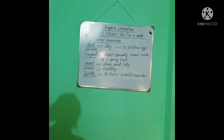Write these words and learn. Laid, that means to produce eggs. Chirped, that means short, squeaky sound made by a young bird. Smart, clean and tidy. Plump, that means healthy, having a round shape. Gentle, to have a mild character.